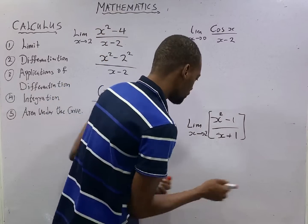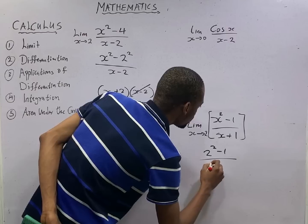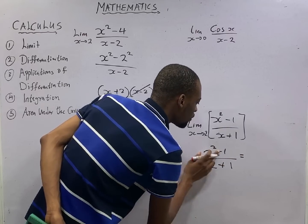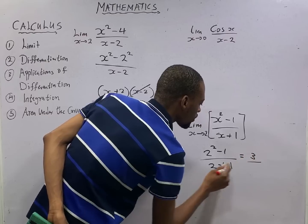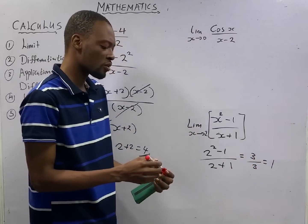Look at this. 2 squared minus 1 over 2 plus 1. This is 2 squared is 4, 4 minus 1 is 3, 2 plus 1 is 3. This is 1. So this is very, very correct.